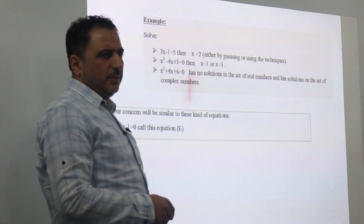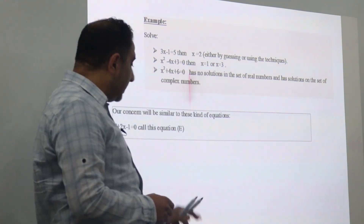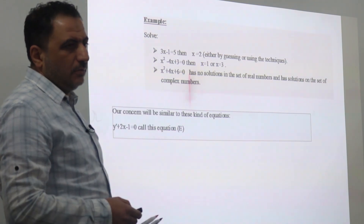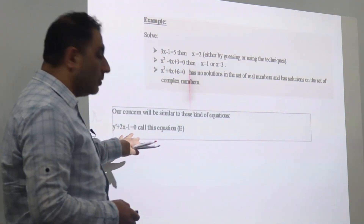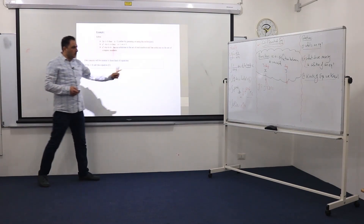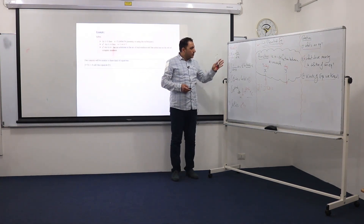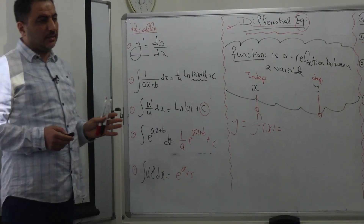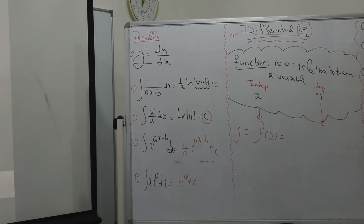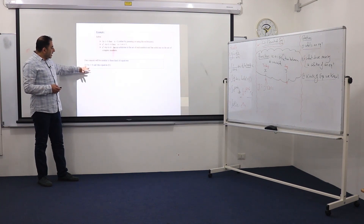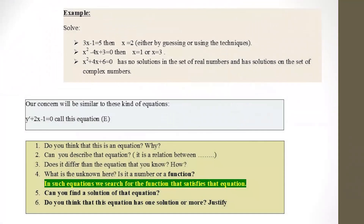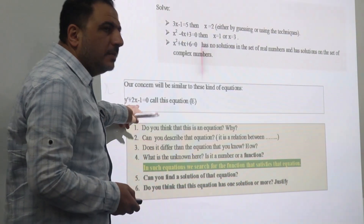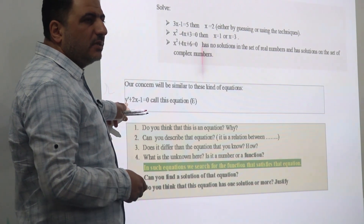Let us take this example: y' + 2x - 1 = 0. Do you think this equation looks like the previous equations? I don't think so, because those equations talk about numbers. But this kind of equation involves y prime, 2x, and minus 1. y prime is dy/dx, so there is a relation between y prime and the independent variable x. There is a y prime plus 2x minus 1 equal to 0. This is an equation — why? Because there are two sides: left-hand side and right-hand side. There is a relation between y prime and the variable x. We call this the first derivative of y with respect to x.